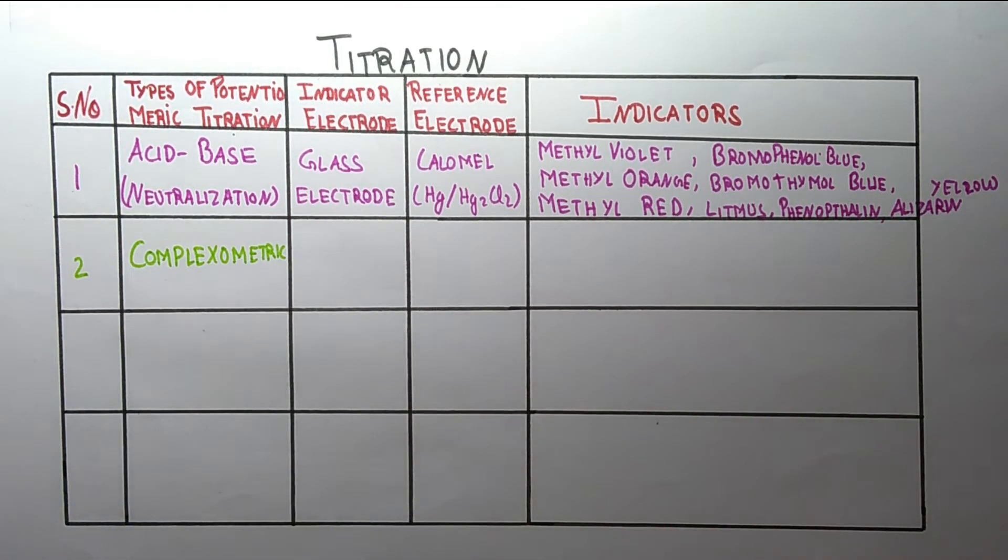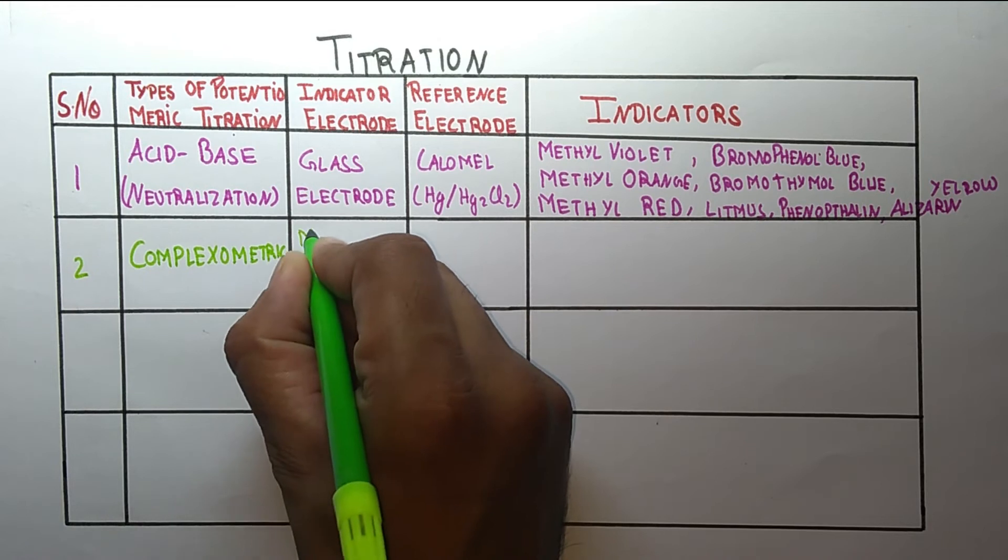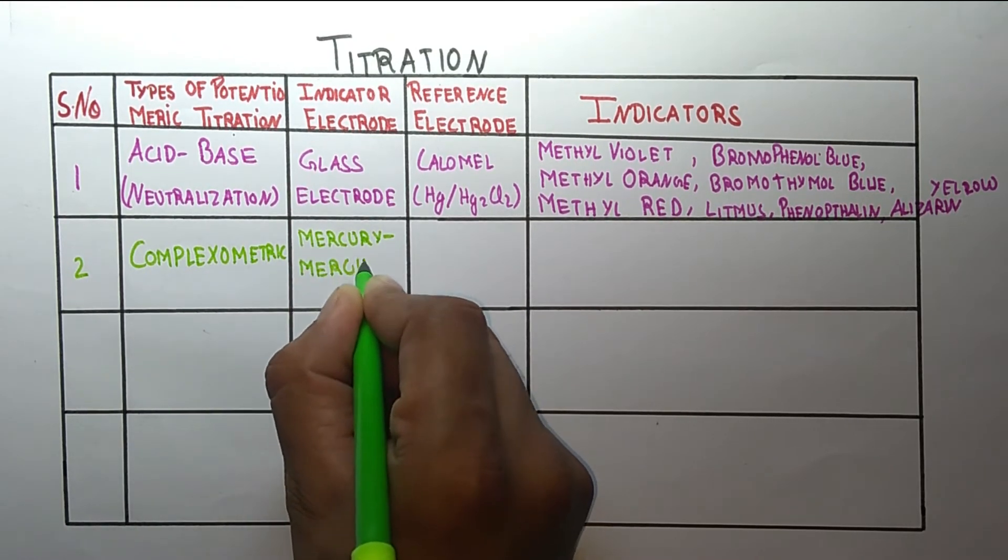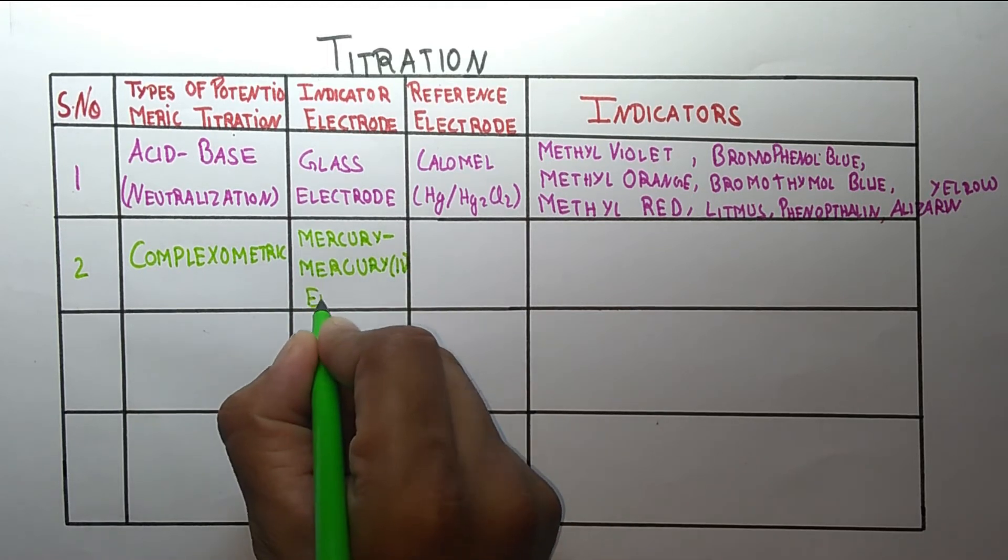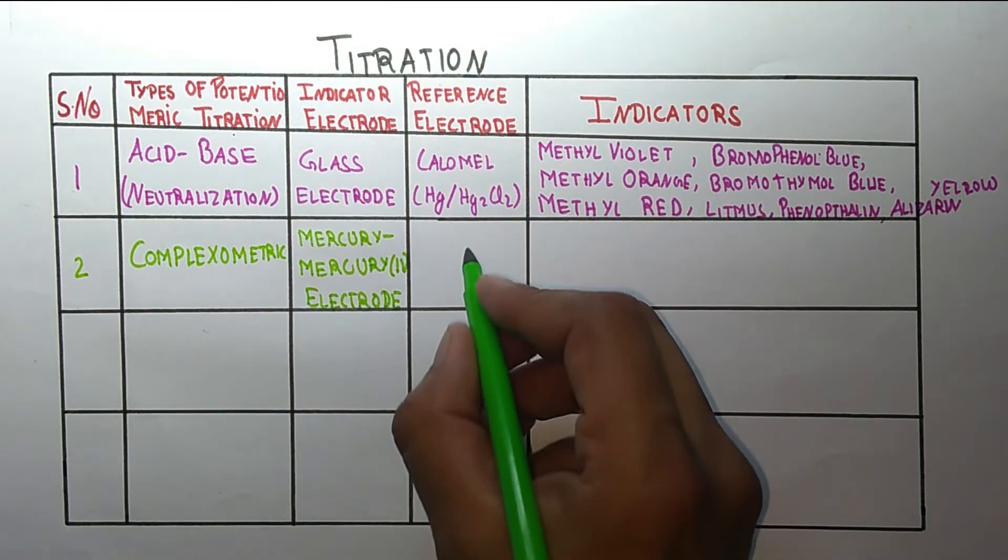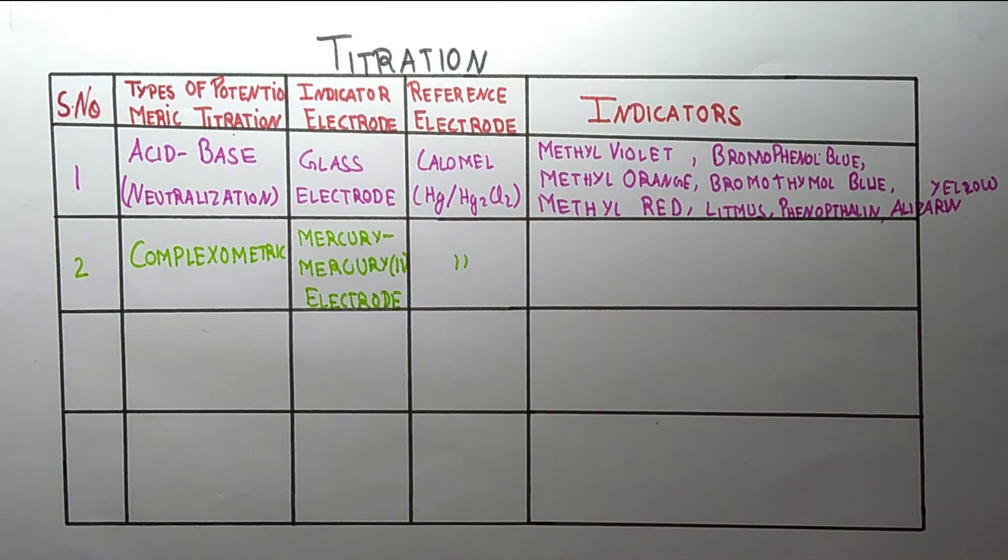In this we use indicator electrode of mercury second electrode. Now talking about the indicators, there are various types of indicators.